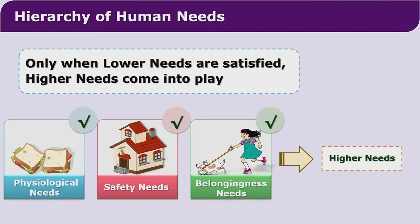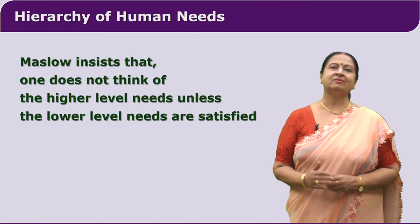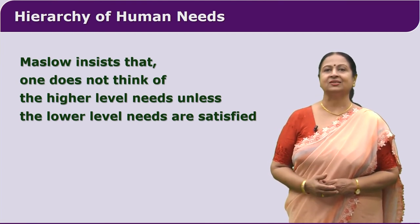First of all, we always think about food. When we don't have anything in our stomach, when we are hungry, we are not able to focus on anything else. Once we satisfy our need for hunger and thirst, we will think about our future and want it to be safe — so we think of safety needs. Once they are also satisfied, we think of love and belongingness needs, and after that, we think of higher needs. Abraham Maslow insists that only when we satisfy lower order needs will we think of satisfying the higher order needs.